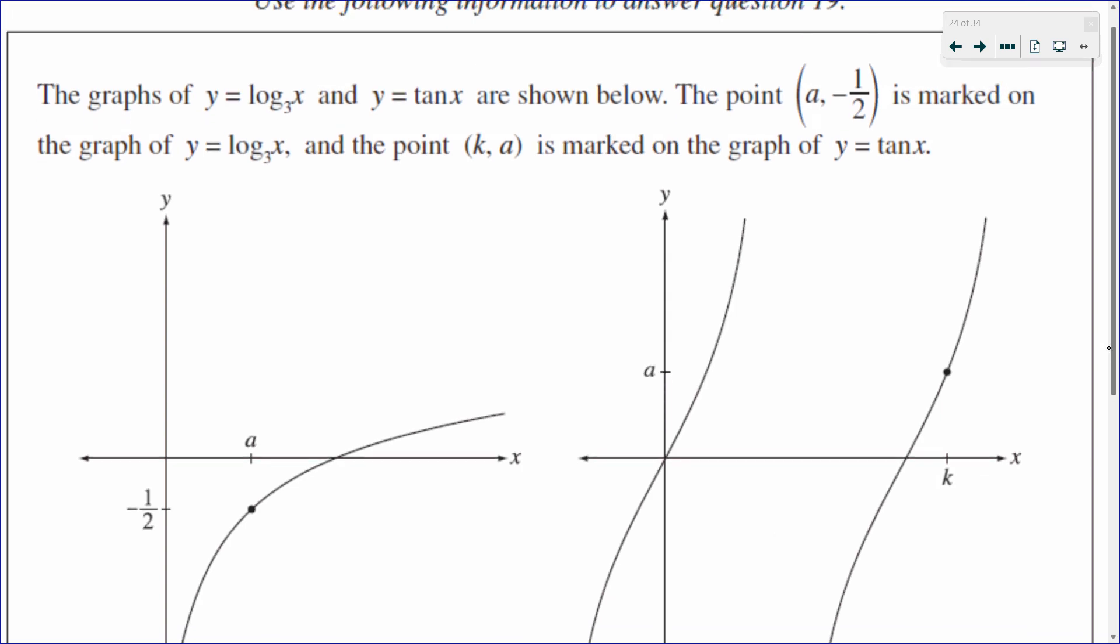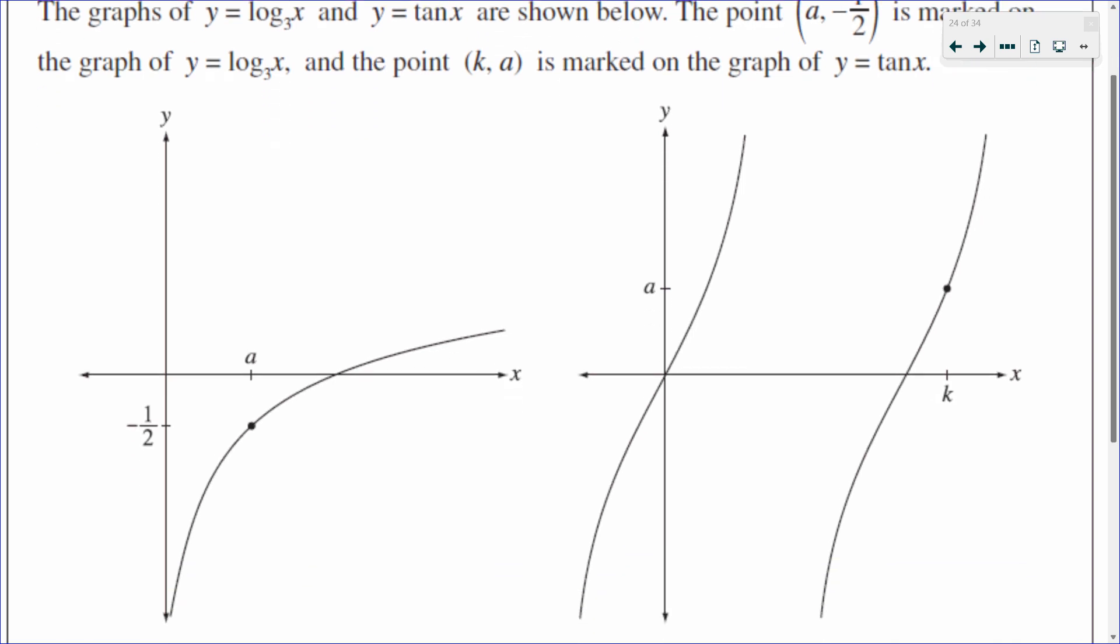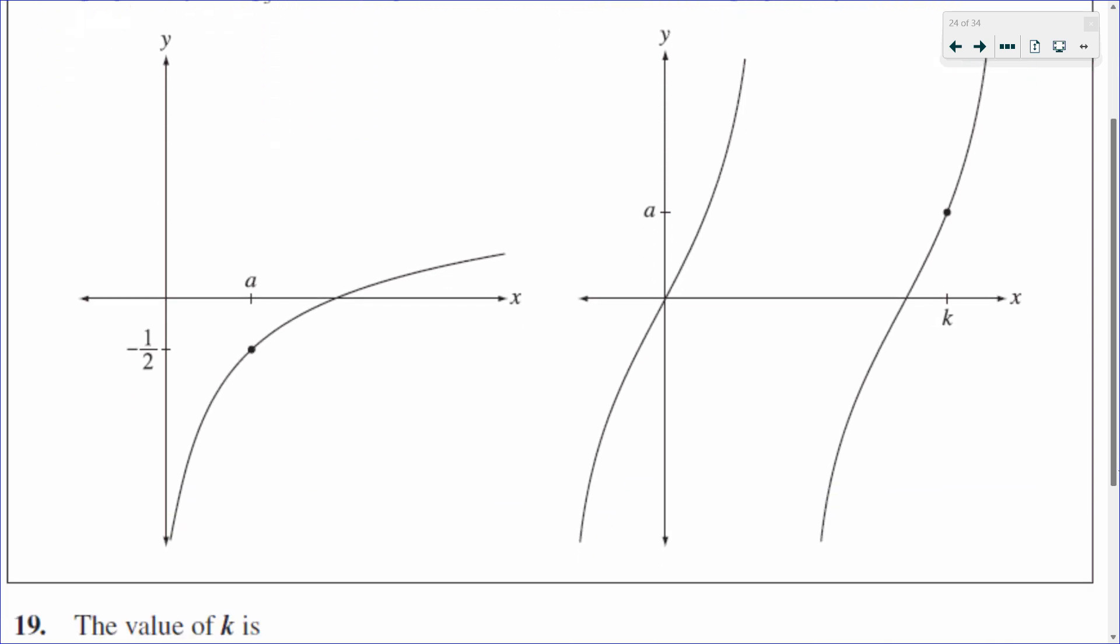In this question here, we have a log and a tan graph. So we're going to compare the two to find a missing parameter on the tan graph. So here's my log graph, which has an equation log base three of X, and it passes through this point A and negative a half.